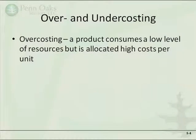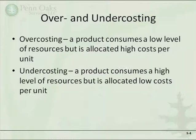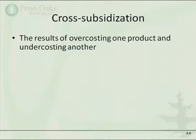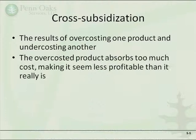Over-costing occurs when a product consumes a low level of resources, but the costing system allocates a high percentage of cost to that cost object — it could be any cost object, not just a product. Under-costing is the opposite, where a cost object consumes a high level of resources but is allocated a low cost per unit. Cross-subsidization means that if you over-cost one product, you must be under-costing another. The over-costed product absorbs too much cost, making it seem less profitable than it really is.